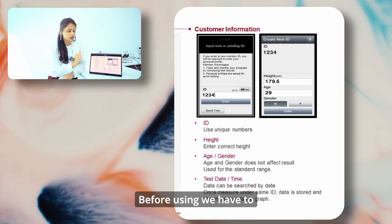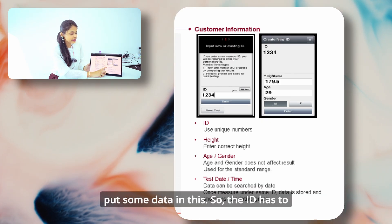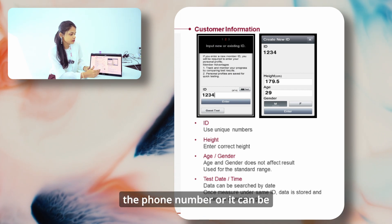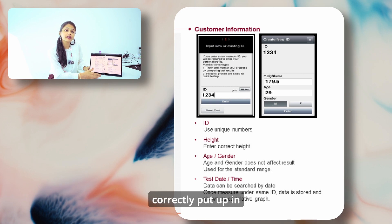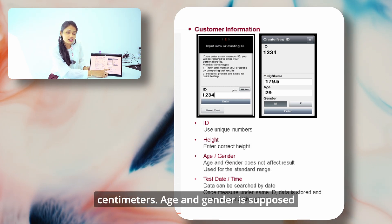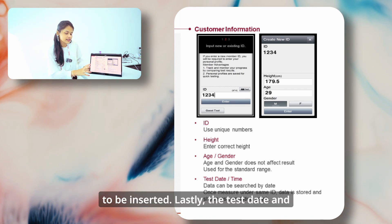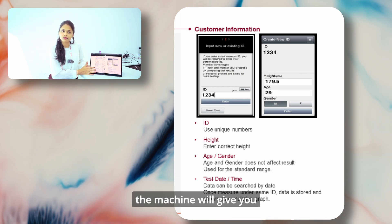Before using the machine, we have to put in some data. The ID has to be entered — it can be the phone number or your name. Then the height has to be correctly entered in centimeters. Age and gender also need to be inserted. Lastly, the test date and time is something which the machine will give you automatically.